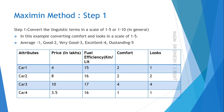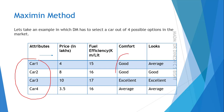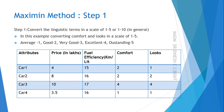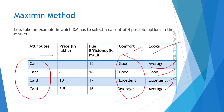Step one: as we can see from the last slide, comfort and looks are given in terms of linguistic values, so these need to be converted into numerical values. We take a scale of 1 to 5 to convert them. In this example, average is 1, good is 2, very good is 3, excellent is 4, and outstanding is 5. Using this scale, we have converted all linguistic values to numerical values.